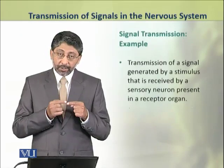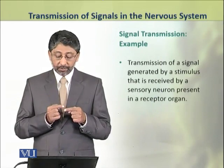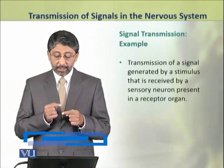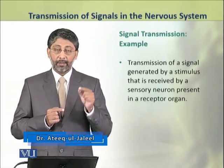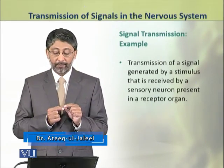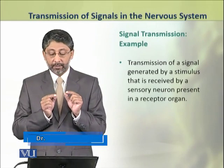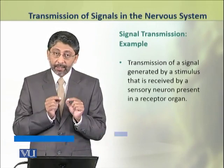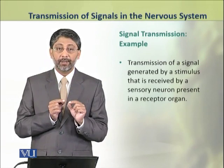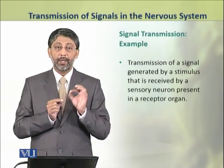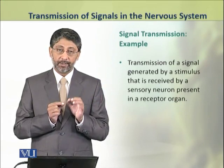We shall take an example in which a stimulus is received by a receptor organ at its sensory neuron. As a result, a signal is generated which is transmitted through the neuron into the other components of the nervous system.